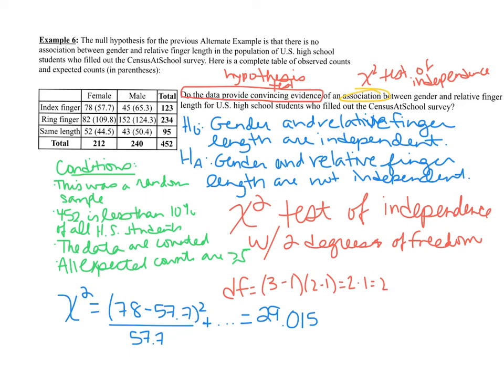That's a pretty high chi-squared value. I'm going to find the p-value by saying the probability that chi-squared is greater than 29.015. If you do the chi-squared CDF on your calculator, you get 5 times 10 to the negative 7.